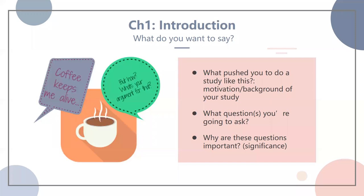The first chapter usually starts with the introduction. Here's a fun picture saying 'coffee keeps me alive — but how? What's your argument for that?' That speaks to the purpose of the introduction section — what pushes you to do a study like this, and what arguments do you offer? Usually in this section you talk about your motivation or the background of your study, emphasizing why doing such a study is important. You could start from your personal experience connecting to your positionality, or connect to what the scholarly field is lacking, which also connects to the literature review.